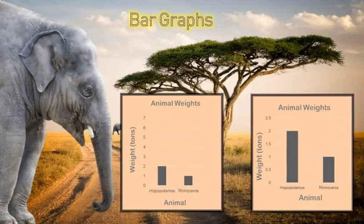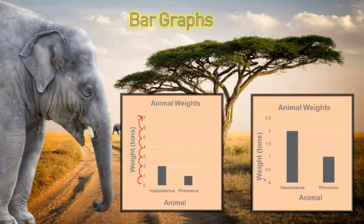Let's take a look at these bar graphs, though. They're the exact same graph comparing the animals' weights, but the only thing that's different is scale. Scale is very important to the look of your graph. In the first bar graph, if we just look at it, we say, oh, hippopotamus doesn't weigh that much more than a rhino. But if we look at the second graph, since the scale is much smaller, it looks like hippopotamus weighs a lot more than a rhino. So it's really important to look at the scales. Here, our scale is going up by ones, whereas here we're going up by half each time.